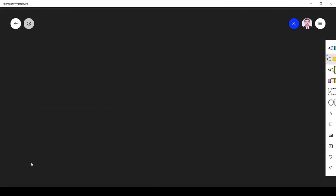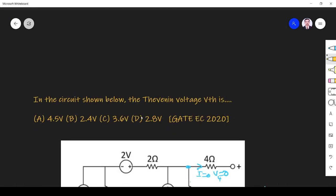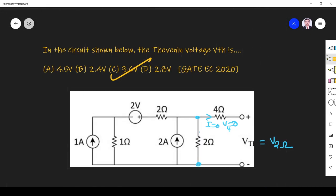So the answer is 3.6 V. So where is the answer, option C. So 3.6 V option C is the right answer. So in this way we can find the answer. Thank you.